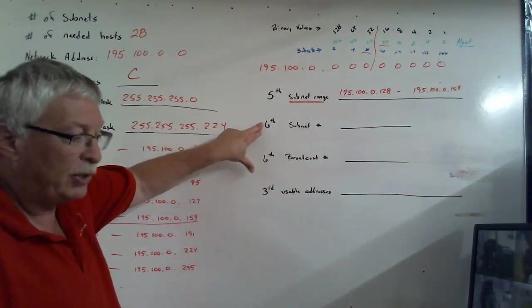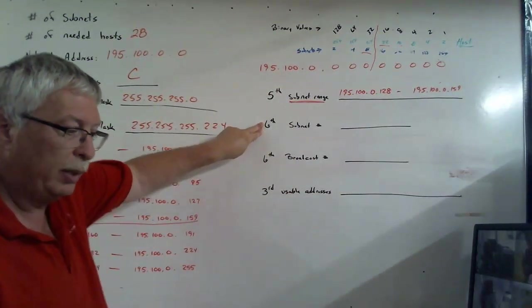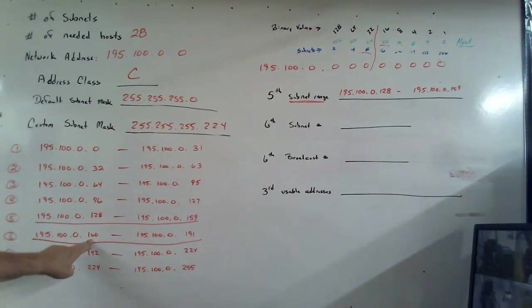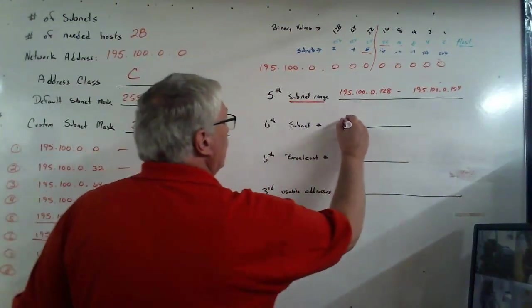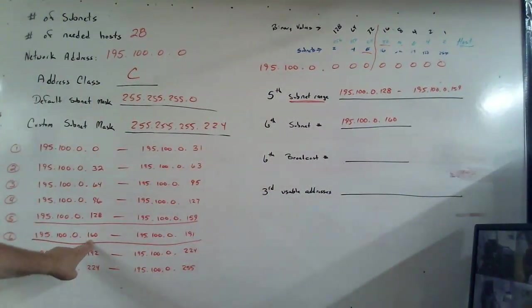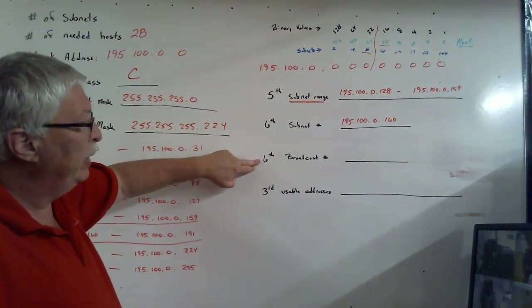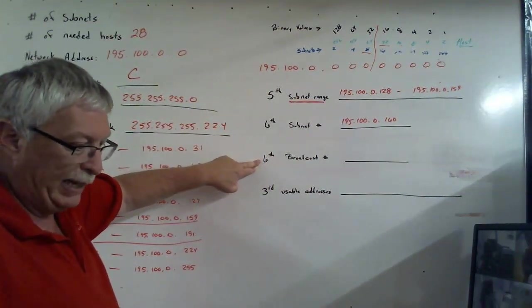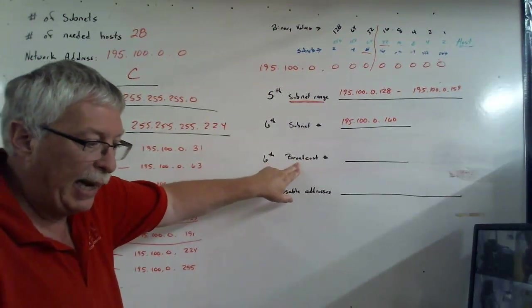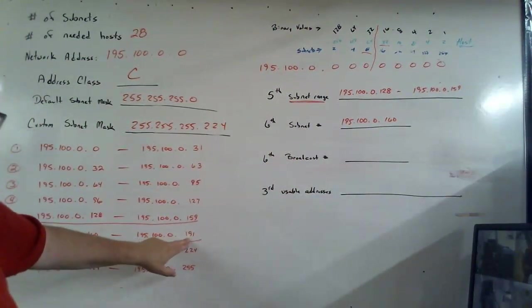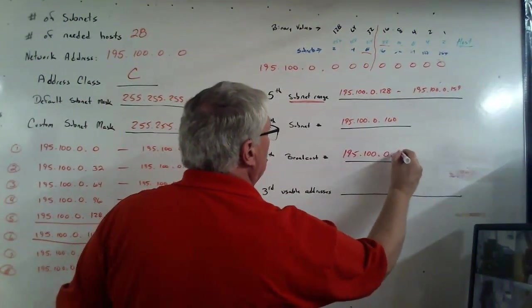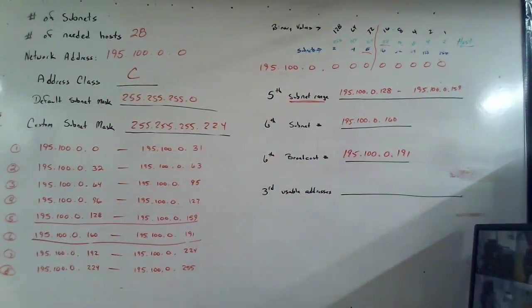Next, we want the sixth subnet number. That means the very first number only. So, we find the sixth range. What's the very first number? It happens to be 160. So, 195.100.0.160. The third thing it wants to know is what is the broadcast number in that same sixth range. Remember, broadcast is the very last number. So, what's the very last number in that sixth range? 191. So, 195.100.0.191.